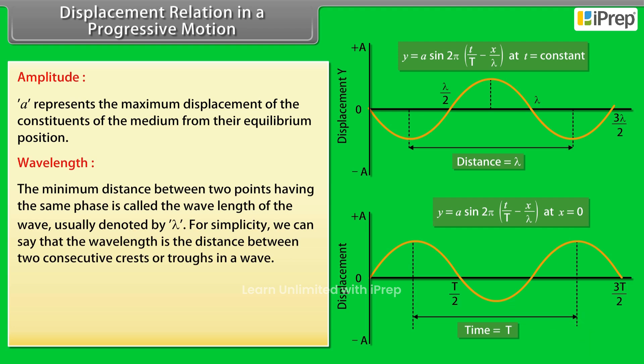Wavelength: The minimum distance between two points having the same phase is called the wavelength of the wave, usually denoted by λ. For simplicity, we can say that the wavelength is the distance between two consecutive crests or troughs in a wave.